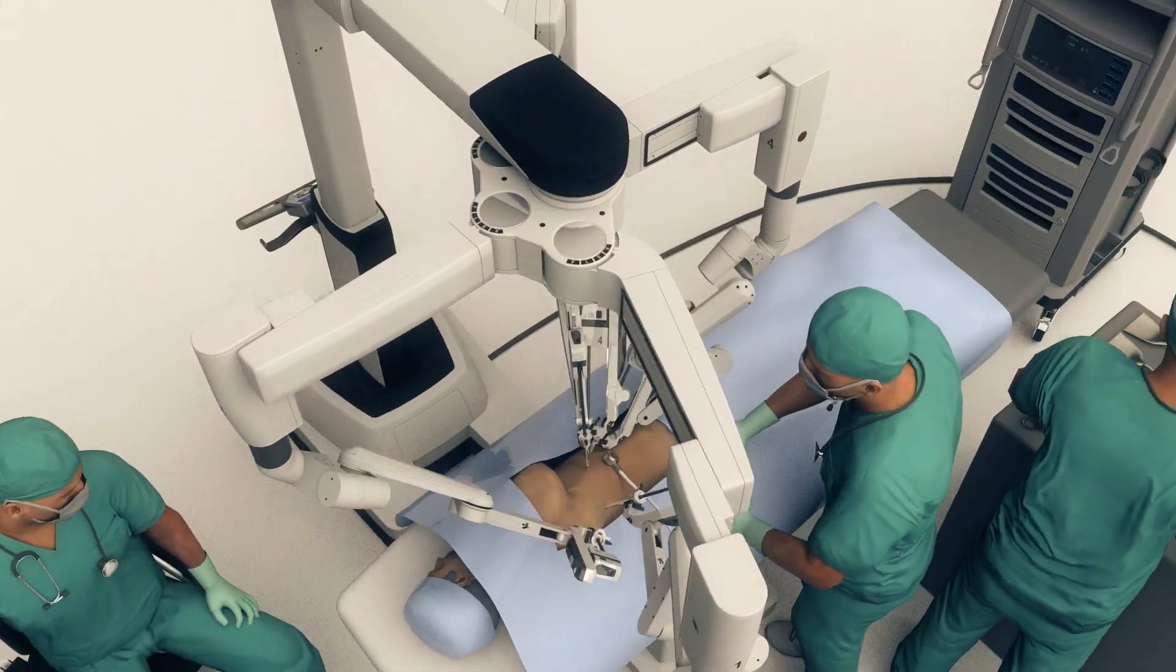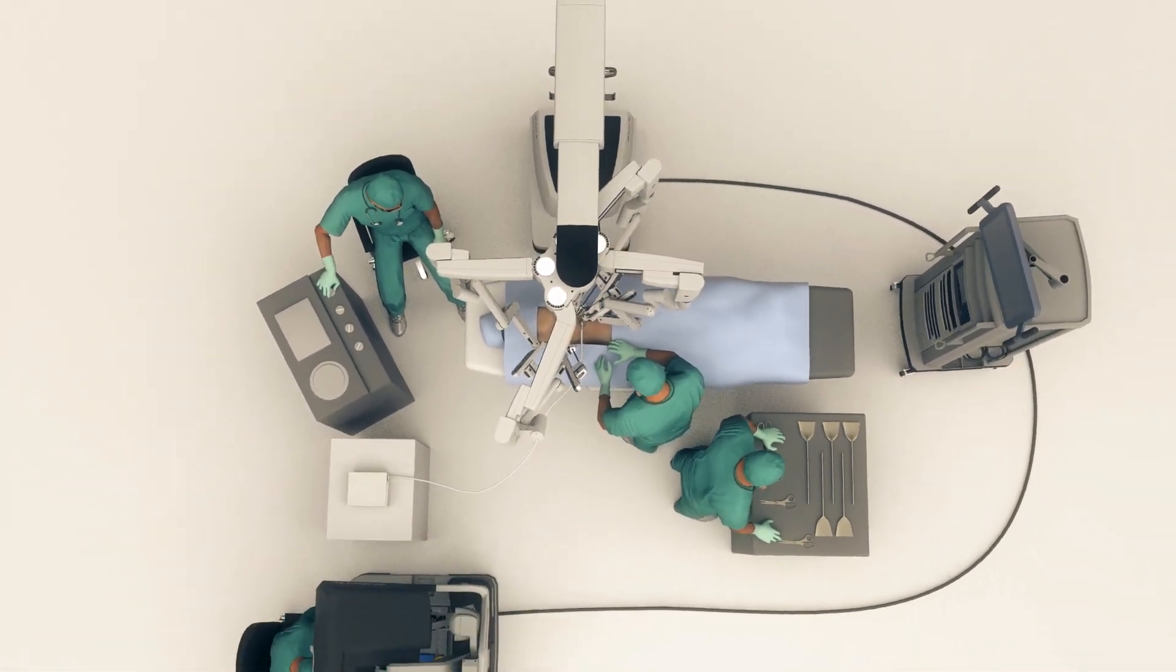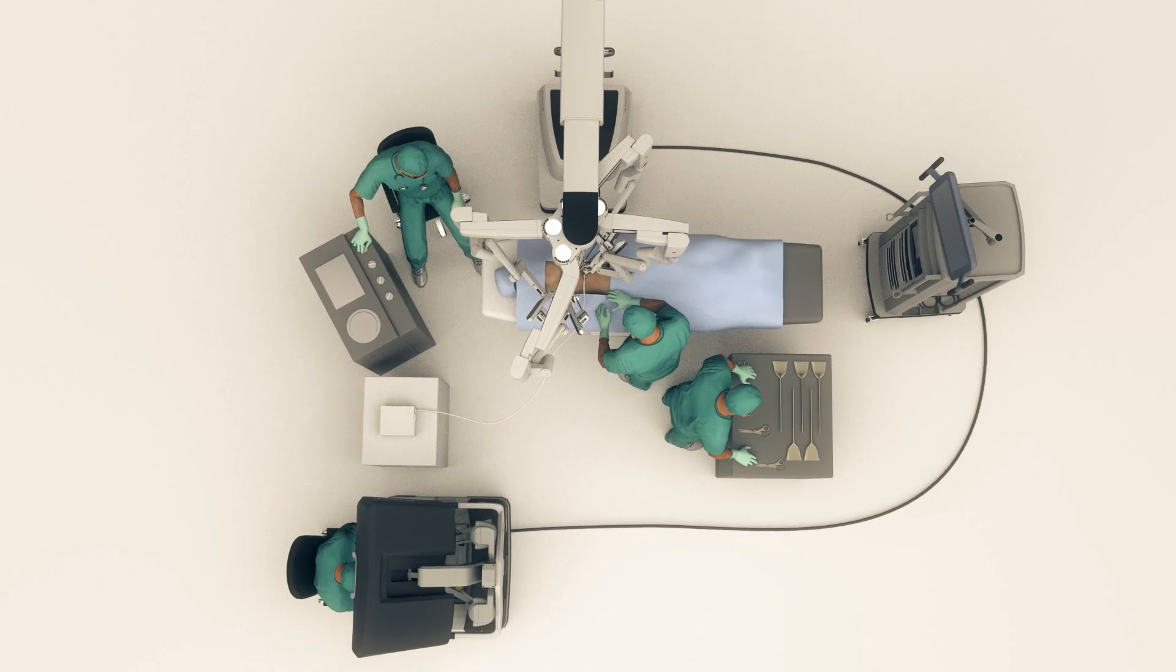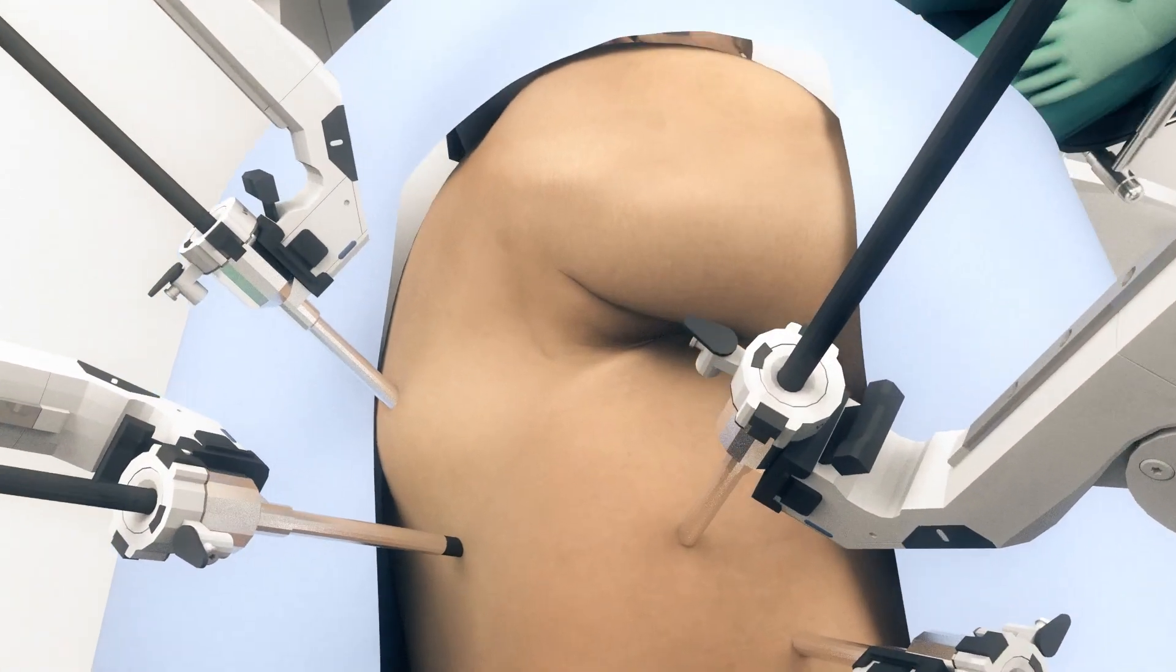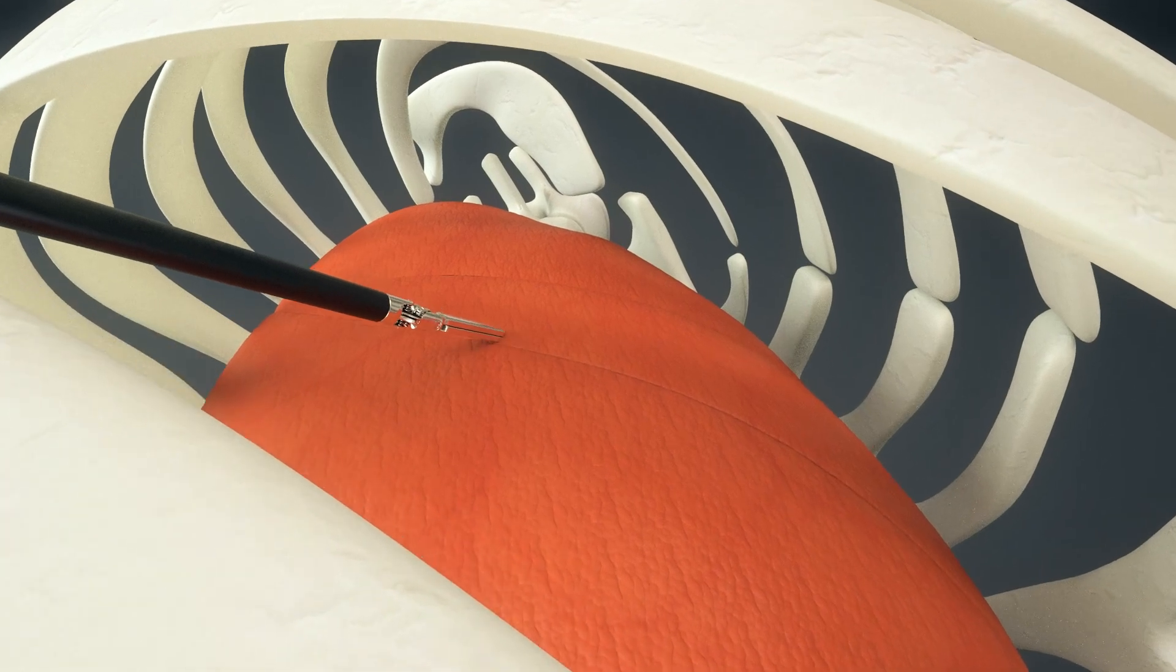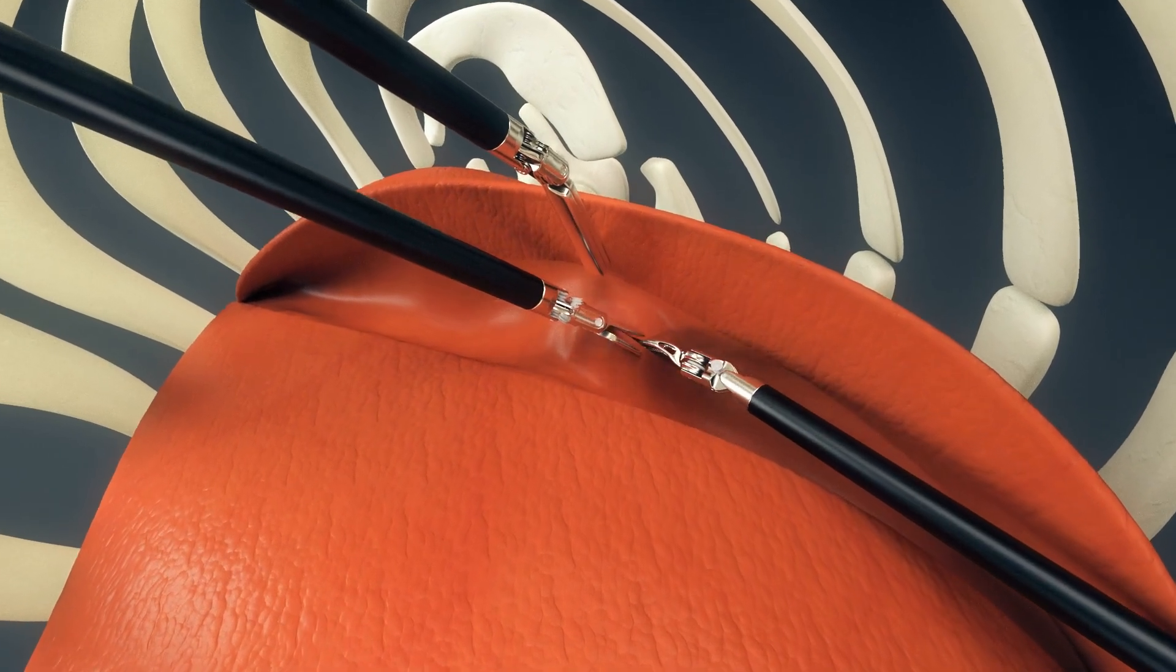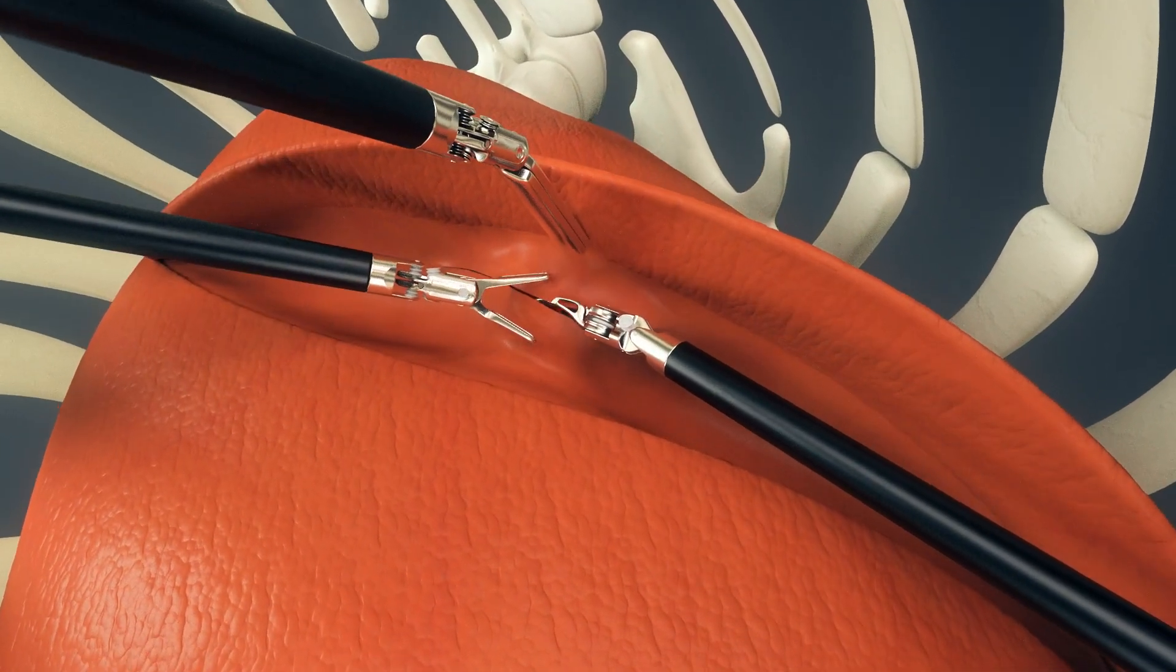Patients, asleep under anesthesia, lie on their side while the surgeon makes up to five small puncture incisions. The robotic instruments gain access to the inside of the patient's chest through thin metal tubes called trocars. These trocars provide ports that allow the camera and instruments to glide smoothly in and out during the procedure.